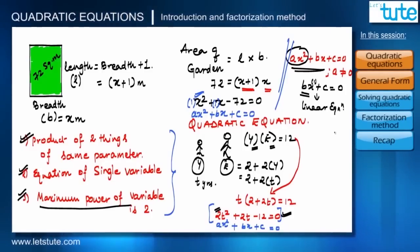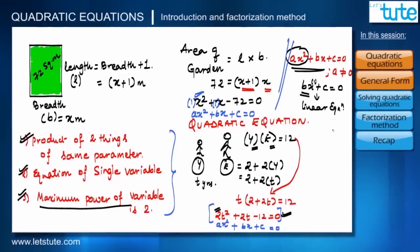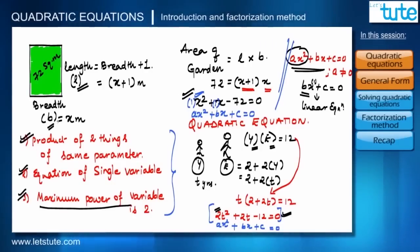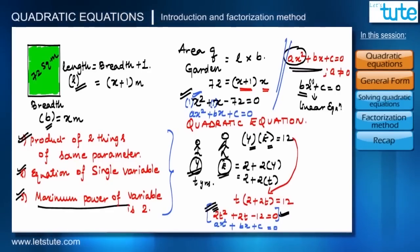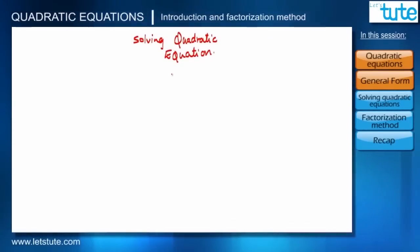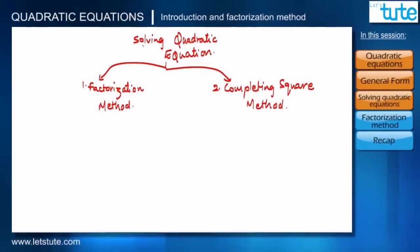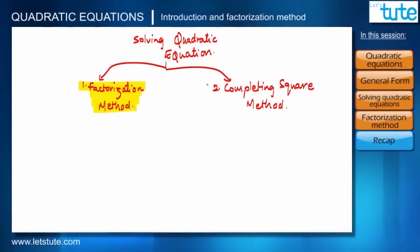Now we know the basic concepts of quadratic equations. Let's learn how to solve them. When we solve a quadratic equation we get the value of the variable — for example, solving the garden equation gives us x, which helps find the length and breadth. Solving the brothers' equation gives t, which helps find their ages. For solving, we have two methods: factorization method and completing the square method. In this session we'll cover the factorization method, and completing the square will be covered in the next session. Let's take the garden equation: x² + x − 72 = 0.